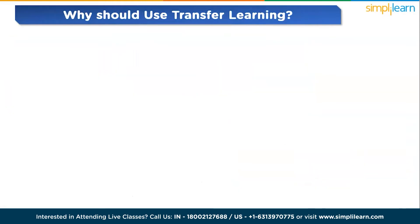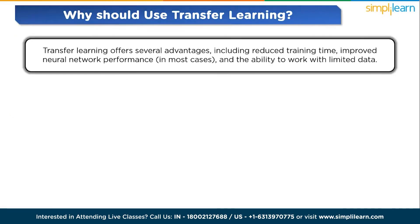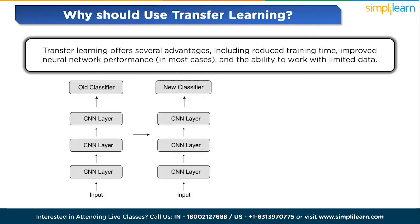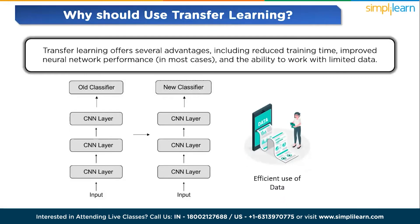Why should you use transfer learning? Transfer learning offers several advantages, including reduced training time, improved neural network performance in most cases, and the ability to work with limited data. Training a neural model from scratch typically requires a substantial amount of data which may not always be readily available. With pre-trained models, you can perform well even with limited training data — especially beneficial in tasks like NLP where obtaining large labeled datasets can be challenging and time-consuming.